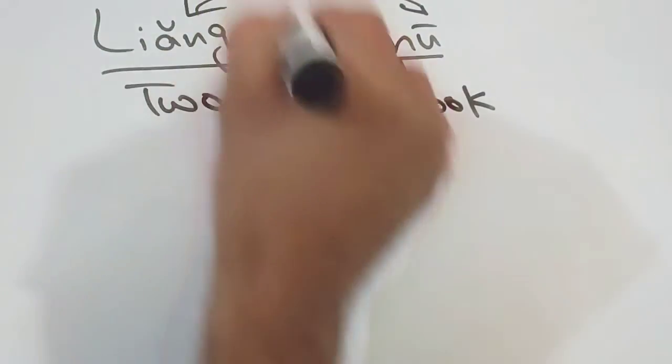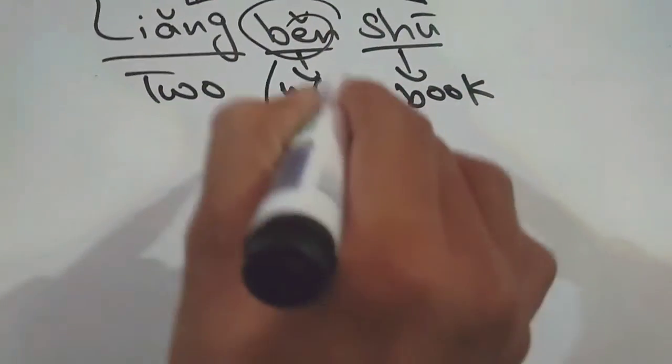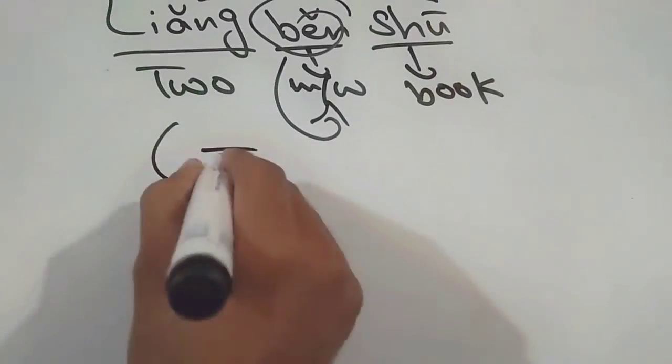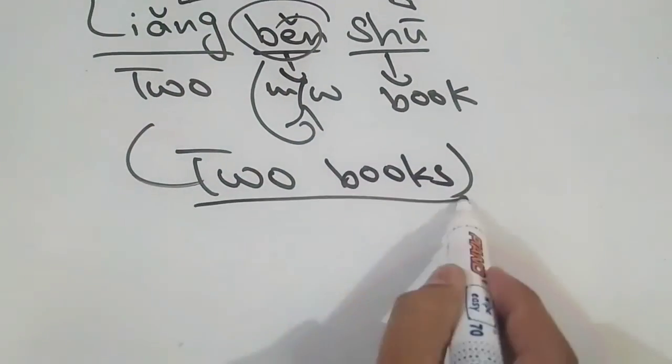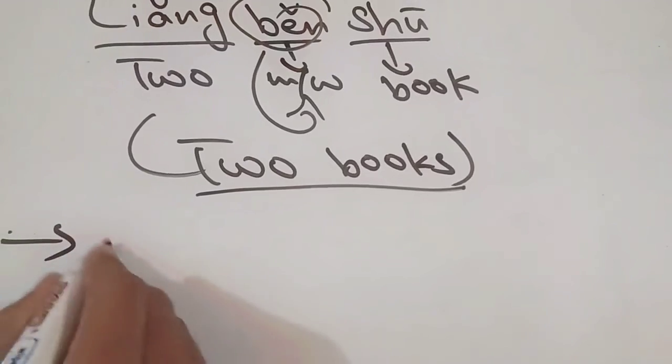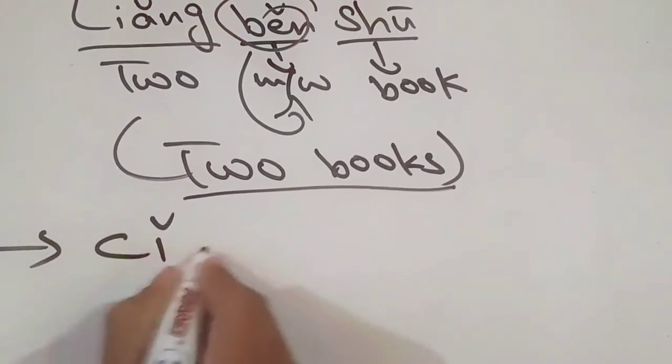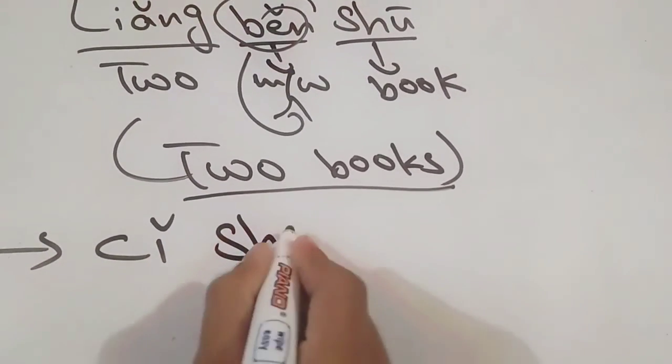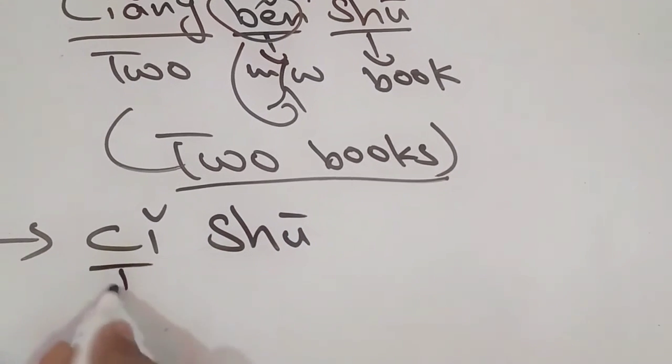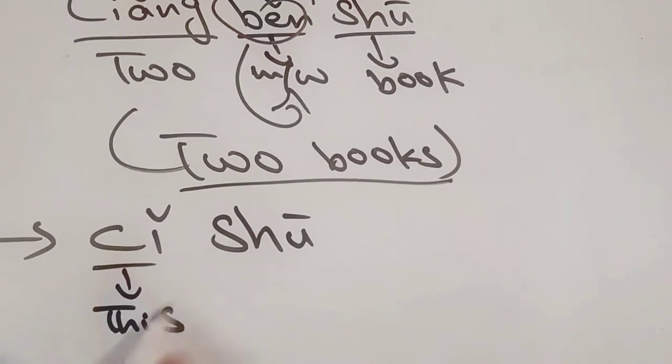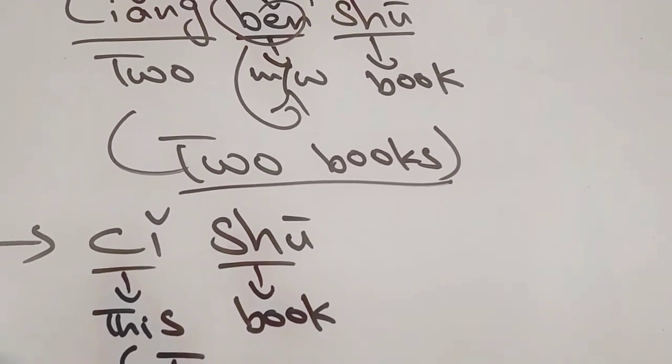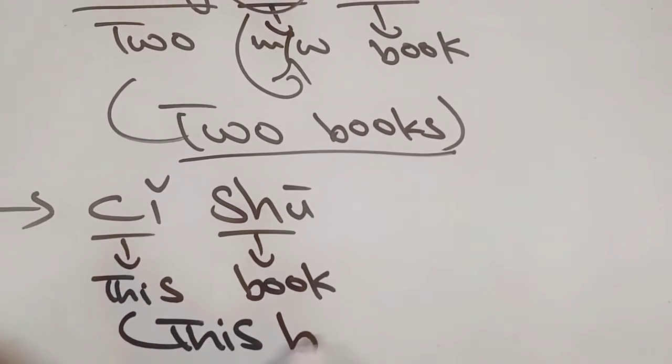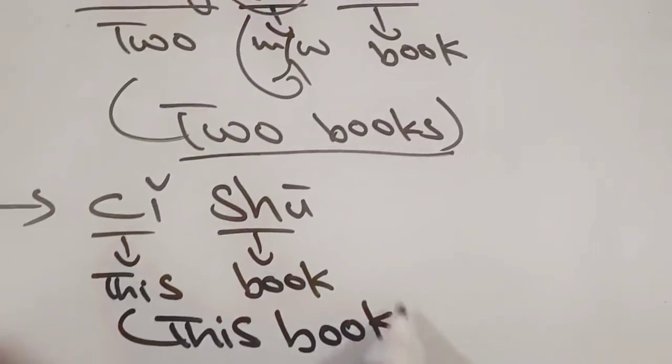Between liǎng and shū, běn is used for a measure word. Two books: liǎng běn shū means two books. Second sentence: zhè shū. The word zhè means this and shū is a book. Zhè shū means this book.